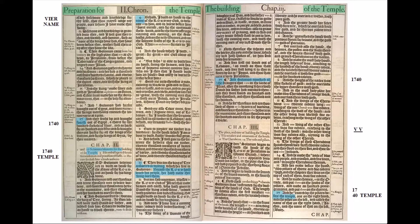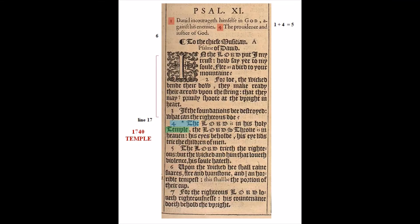Continuing with the theme of 11, let's look at Psalm 11. The verse reference number equals 5. Then start counting the verse lines. Following line 17 is 4, 'the,' or 4, T, and 'temple': 17, 4, T, temple. There's even an asterisk there, drawing your attention to it.